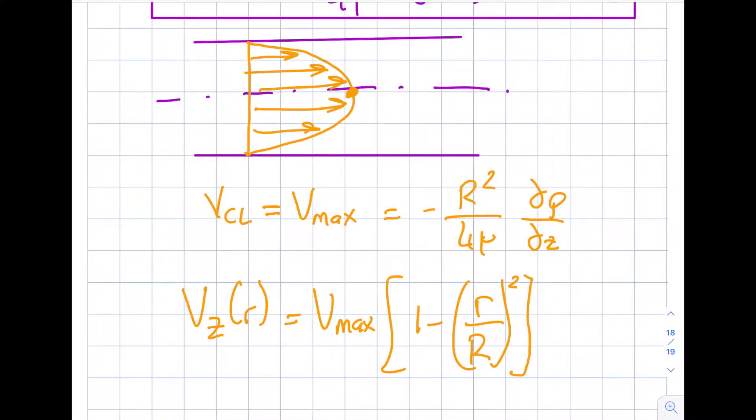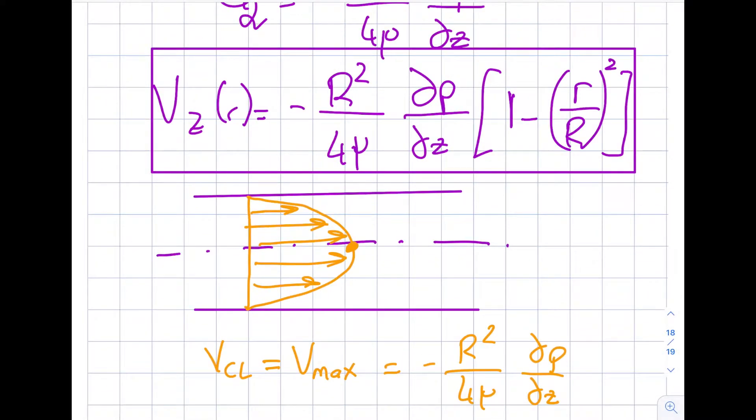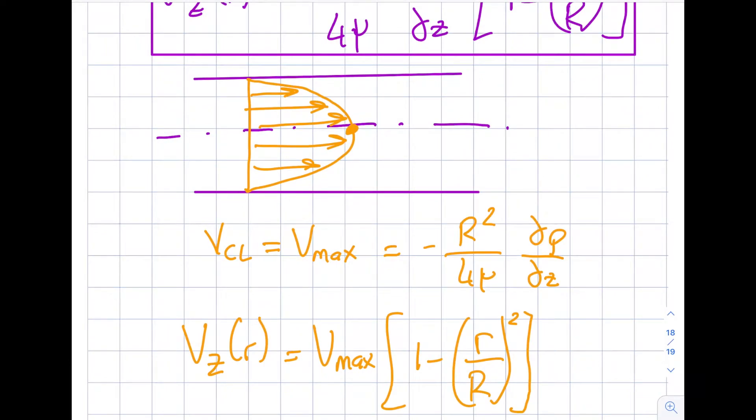In the previous segment we analyzed the Hagen-Poiseuille flow, the viscous flow in circular pipes. We obtained our velocity as this, and we said that this is the V_max. One thing I wanted to say: note that there's a negative sign, but this value is negative, so this will end up with a positive value.